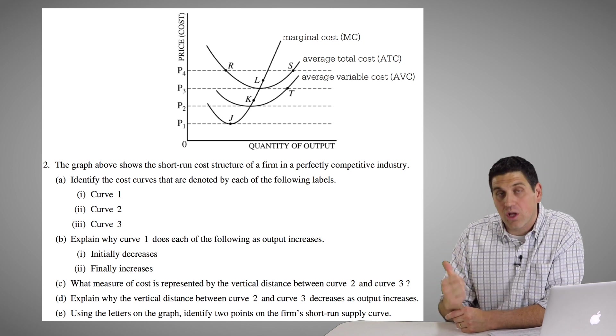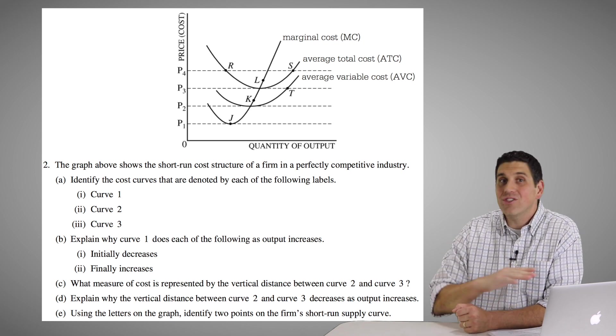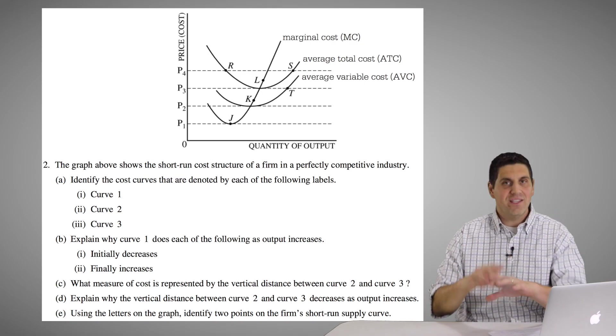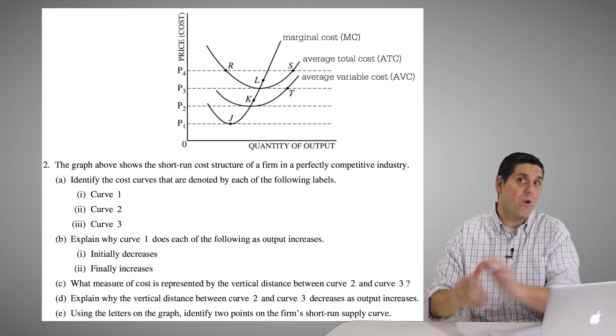So again, it's marginal cost, average total cost, average variable cost. Notice there's no explaining this question. This is not like a why, how did you know? This is just did you get the concept, do you understand cost curves?